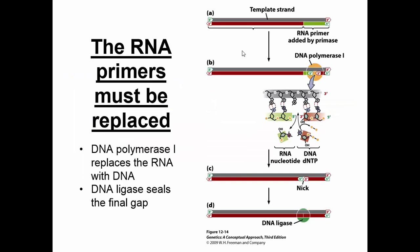RNA primers must be replaced. When we replicate DNA, we have RNA primers speckled throughout. DNA polymerase 1 hops on and removes the RNA primer, replacing it with actual DNA. Then there will be a nick — a part of the strand where the two backbone segments are not linked together. An enzyme called DNA ligase comes in and seals the bond between those backbone fragments, completing DNA replication.